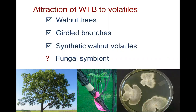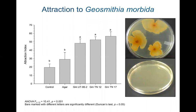The next question is: are they attracted to the volatiles of the fungal symbiont, Geosmithia morbida? As mentioned earlier, there's good evidence in other ambrosia beetle and bark beetle systems that beetles are attracted to the volatiles of the symbiont. So we set out to characterize those volatiles and test them in bioassays. We tested the response of the beetles to volatiles from colonized agar plates — agar plates colonized with isolates from Tennessee.